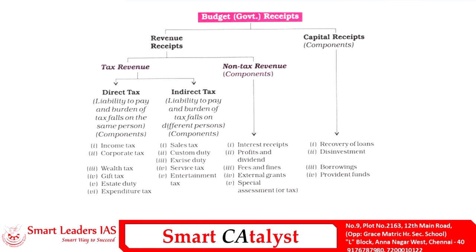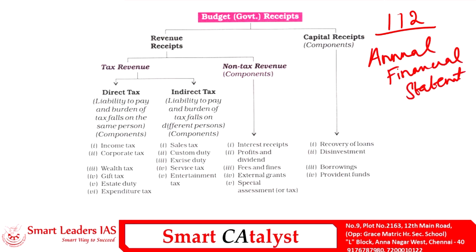Let's begin with the basics of the budget. Article 112 of the Indian Constitution talks about the budget. The Constitution refers to the Union Budget as the Annual Financial Statement, and this Annual Financial Statement provides a vision and also a signal for the policies which will be coming in the future. Every budget has three main components — the first component talks about the actual figures of the previous year.